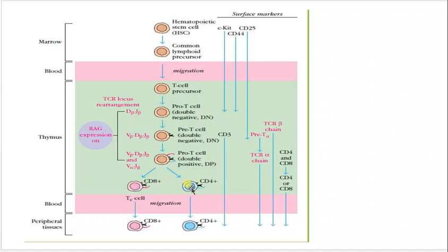After the double positive stage, thymic selection occurs — both positive and negative selection. After these two selections, the T-cell expresses only one type of receptor: either the CD8 receptor or the CD4 receptor, and loses the other. Once it carries only a single positive receptor, it becomes mature. If it contains the CD4 receptor, it becomes a helper T-cell; if it contains CD8, it becomes a killer T-cell. After maturation, it migrates to the peripheral tissue.